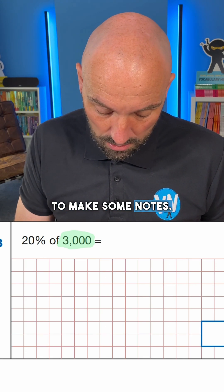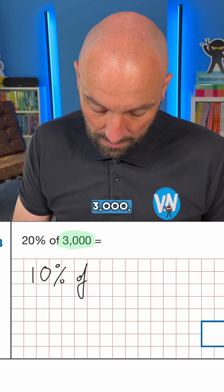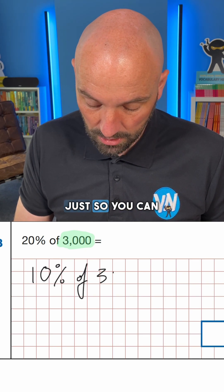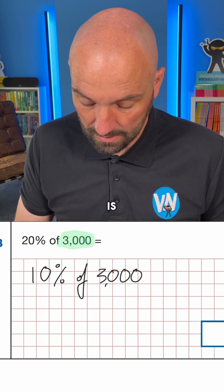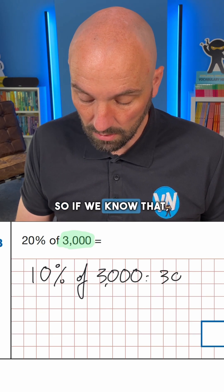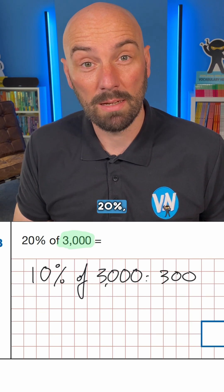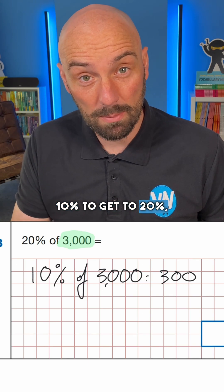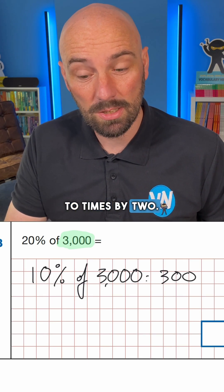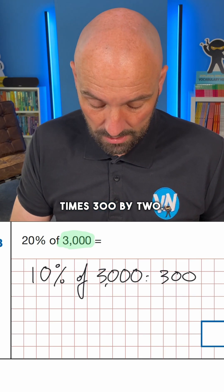So I always like to make some notes. 10% of 3,000 is 300. If we know that, then we can find 20% — from 10% to get to 20% we just times by 2, so we're going to times 300 by 2.